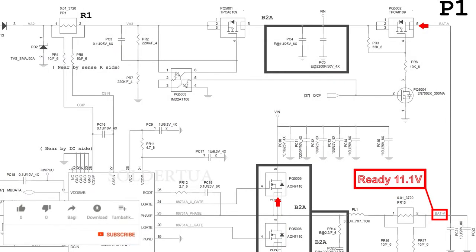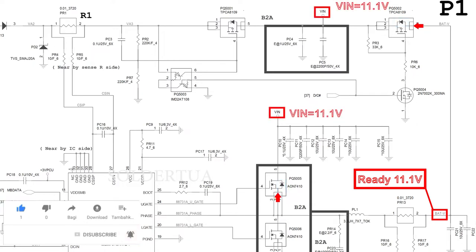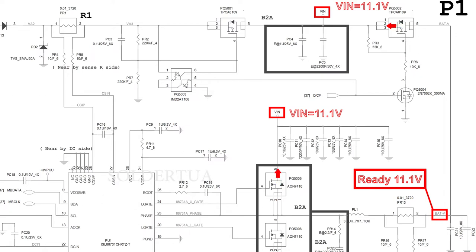How then can electric current pass through PQ5002 and PQ5005? Looking at the schematic again, inside MOSFET PQ5002 and PQ5005 there is a diode symbol. This is where current flows — from the drain pin to the source pin of MOSFET PQ5002, and from the source pin to the drain pin of MOSFET PQ5005. At this point the VIN line actually has a supply voltage coming from the battery.